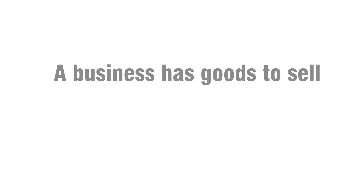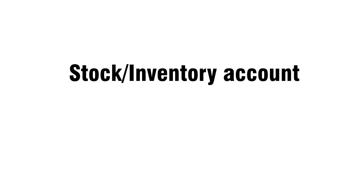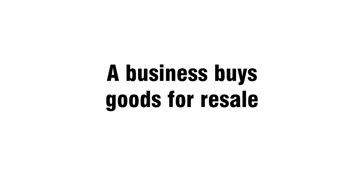Activity five: a business has goods to sell. Stock or inventory account. Activity six: a business buys goods for resale. Purchases account.